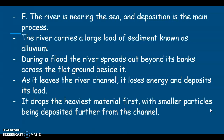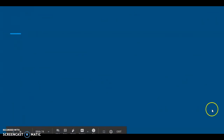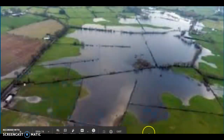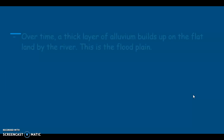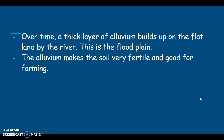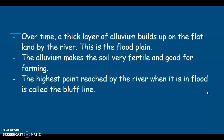It drops the heaviest material first, close to the river channel, and the lighter material is deposited further away. Over time, a thick layer of alluvium builds up on the flat land by the river — this is the floodplain. Alluvium makes soil very fertile and good for farming. It's part of the reason why many of the ancient civilizations started in river basins or close to floodplains. The highest point reached by the river when it is in flood is called the bluff line.